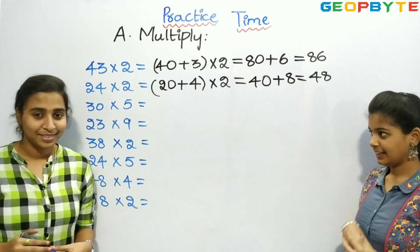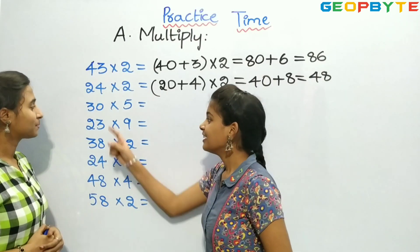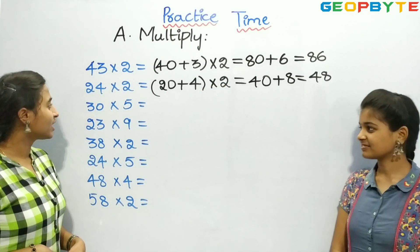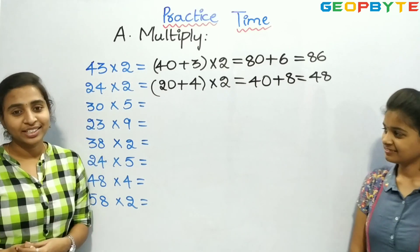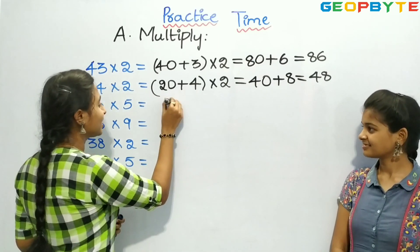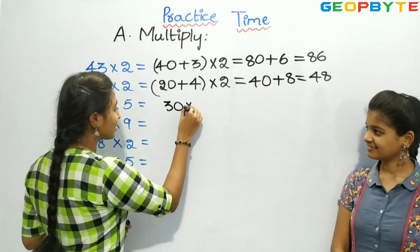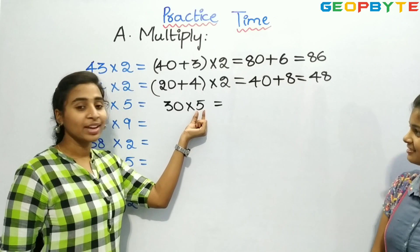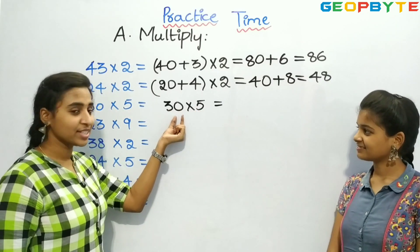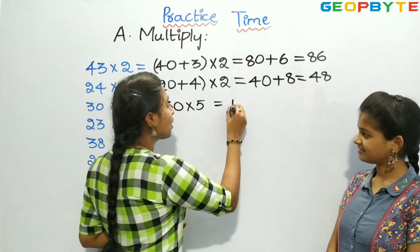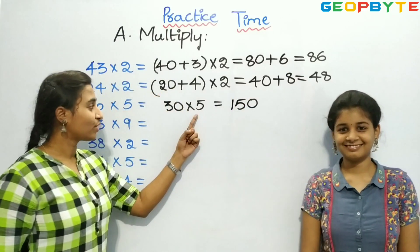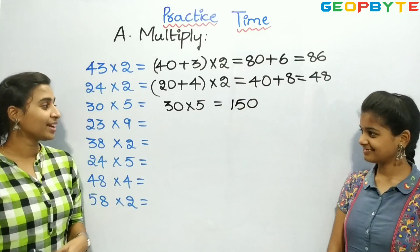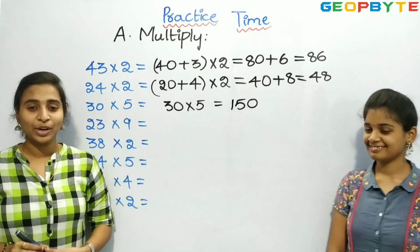Now let us see the next one: 30 into 5. Children, here we have directly 30 into 5. If you see, 3 into 5 is nothing but 15, and we have a 0. So it is 150. So children, 30 into 5 is equal to 150.